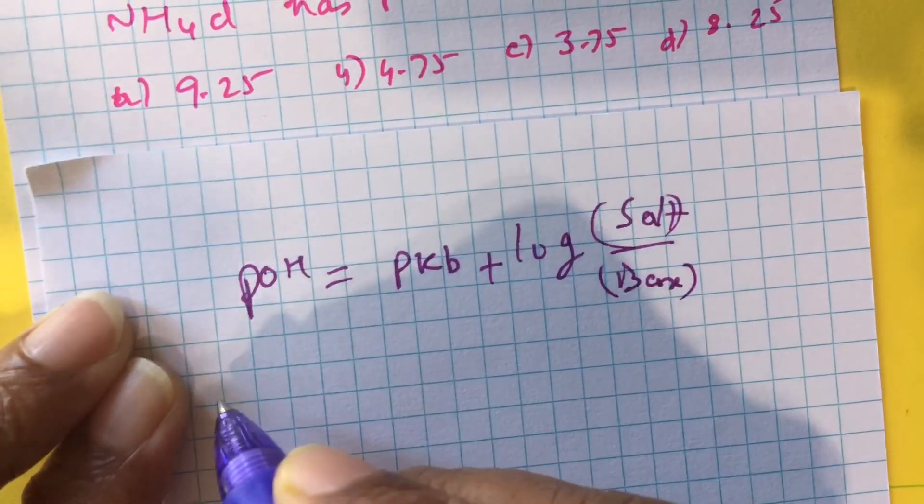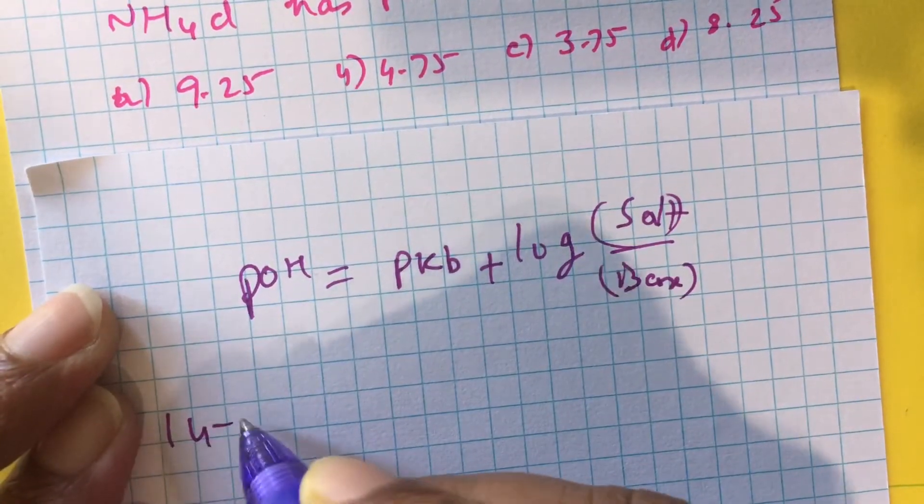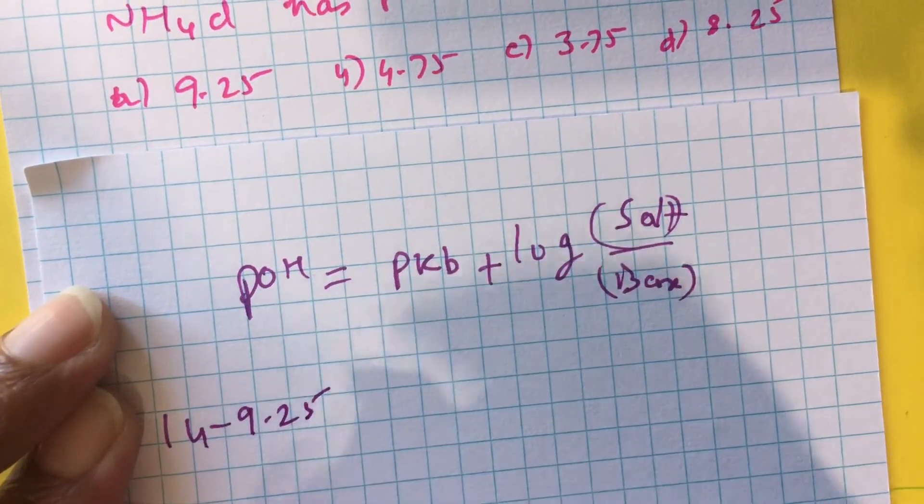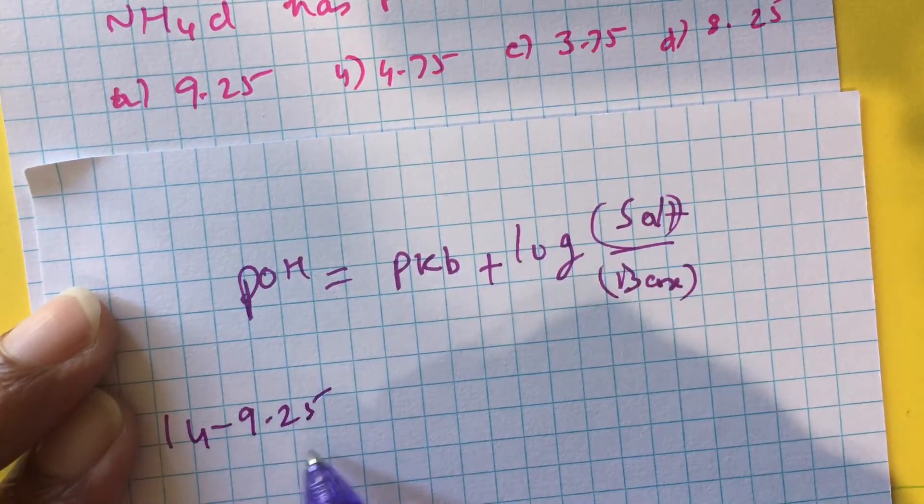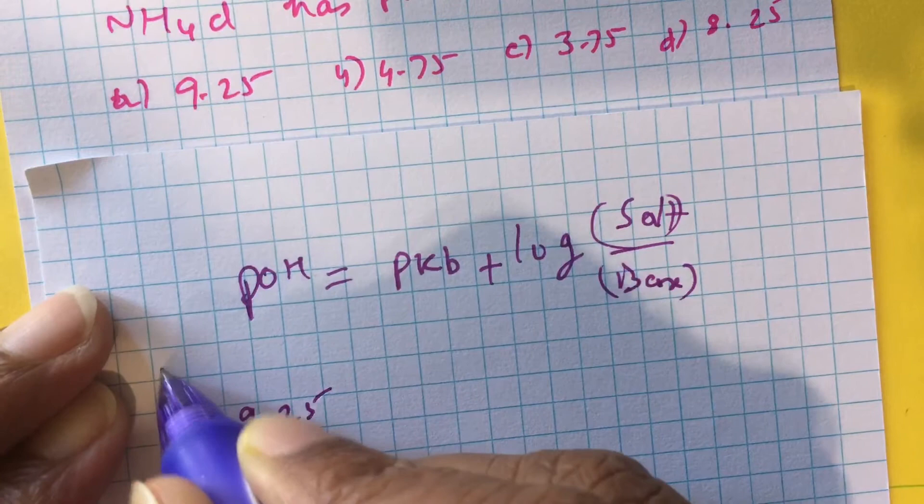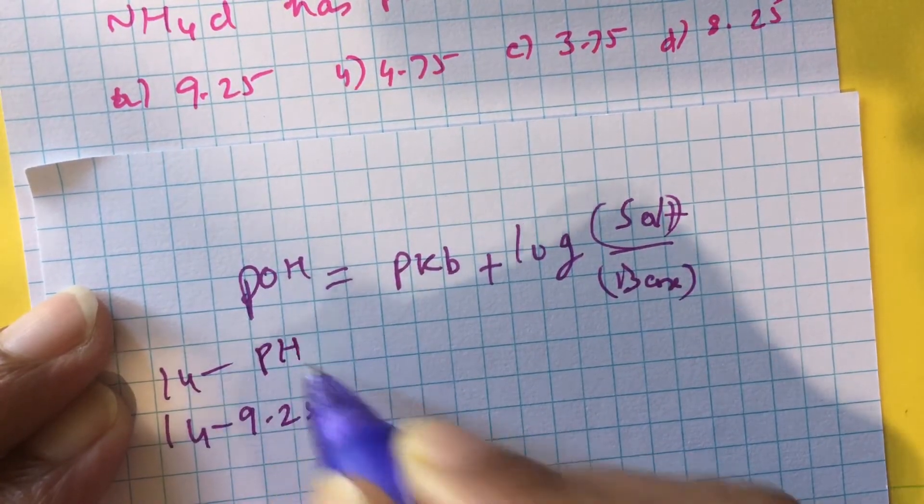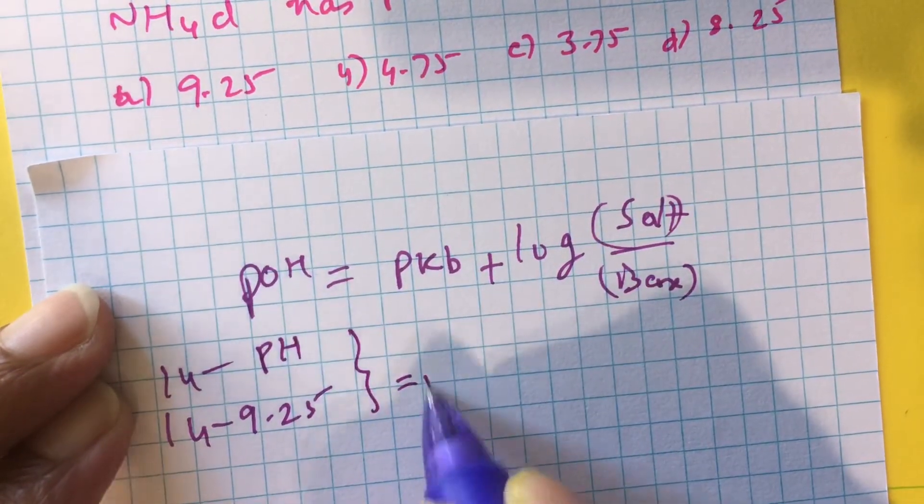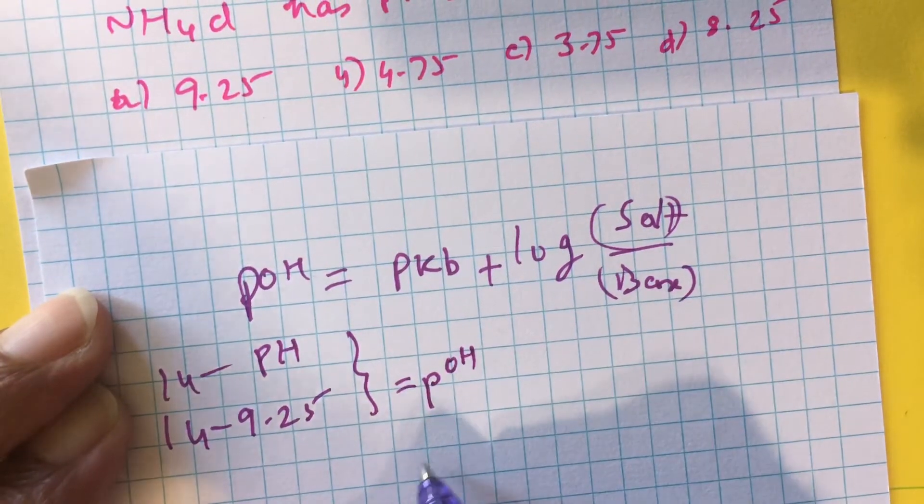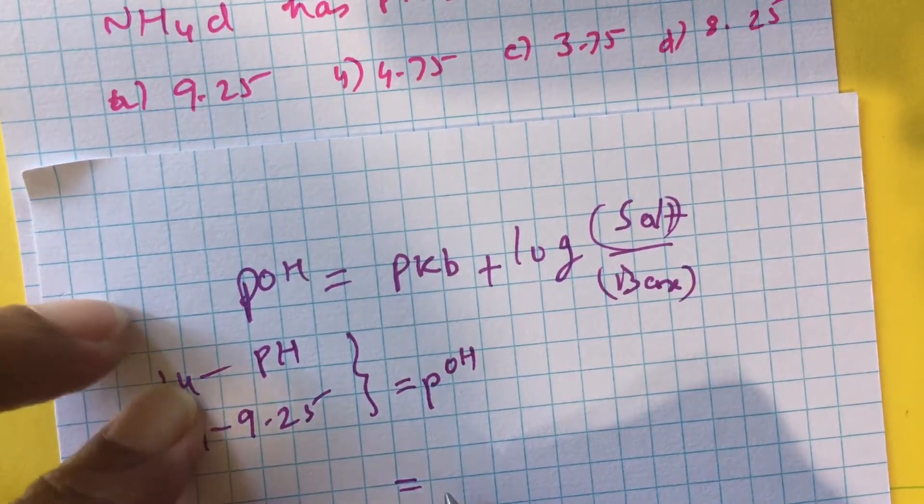Now they have given pH, so pOH is equal to 14 minus pH. 14 minus pH equals 14 minus 9.25, which is 4.75.